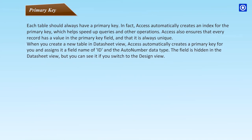Primary Key: Each table should always have a primary key. Access automatically creates an index for the primary key, which helps speed up queries and other operations. Access also ensures that every record has a value in the primary key field and that it is always unique. When you create a new table in Datasheet View, Access automatically creates a primary key and assigns it a field name of ID with the AutoNumber data type. The field is hidden in Datasheet View but visible if you switch to Design View.